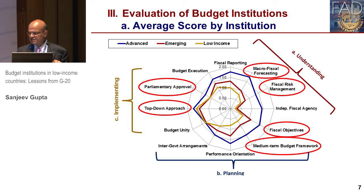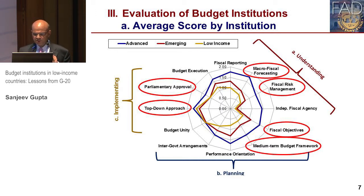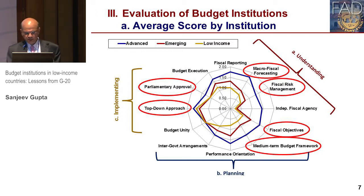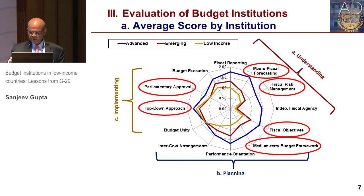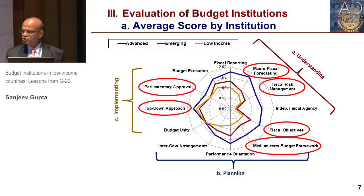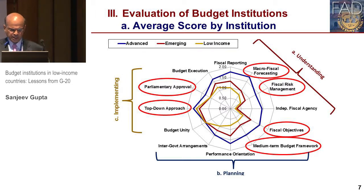When we applied this to seven low-income countries along with the G20 advanced and emerging country results, we can see the blue line — scores are highest for the advanced G20 countries, then comes the emerging markets, then the low-income countries in yellow. One interesting finding is that the deviation for low-income countries versus advanced and emerging markets is highest for the understanding and planning stages. In the implementation stage, the gaps are much, much smaller.